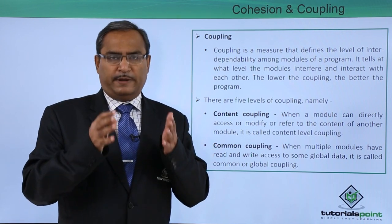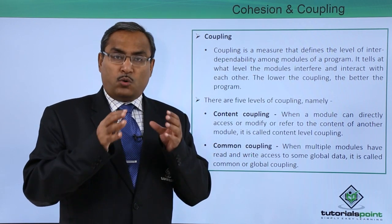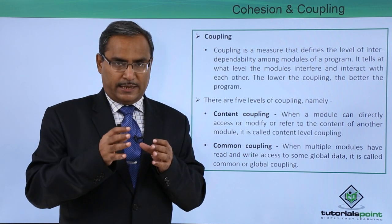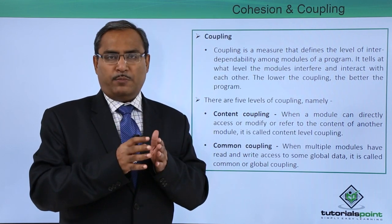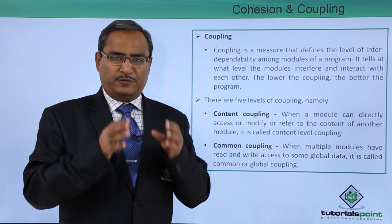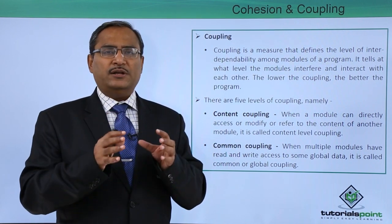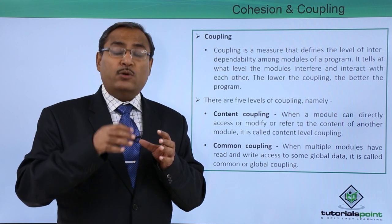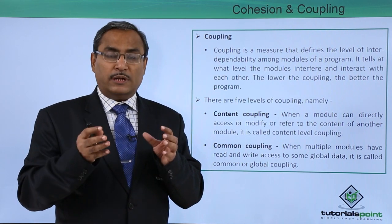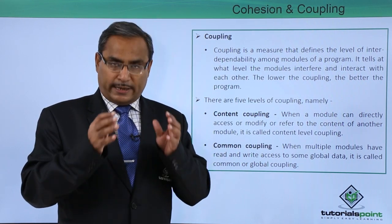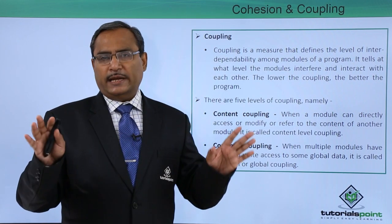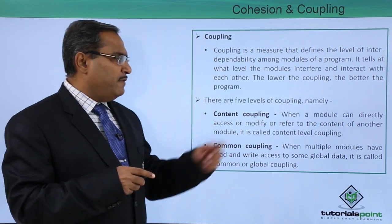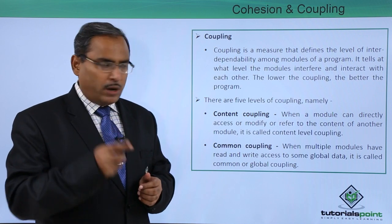Always remember: higher cohesion within modules is expected, and lower coupling between modules is expected. If you find a software design where the modules are highly cohesive and the coupling between modules is very less, that means it is a good software design. There are five levels of coupling.